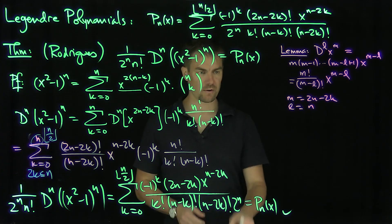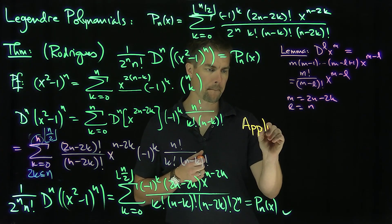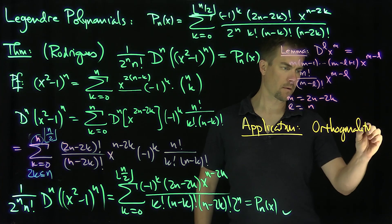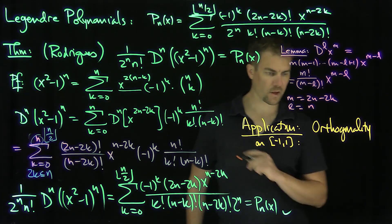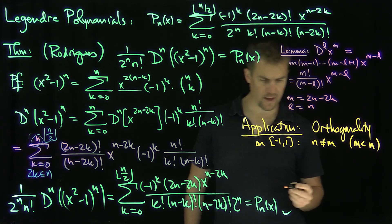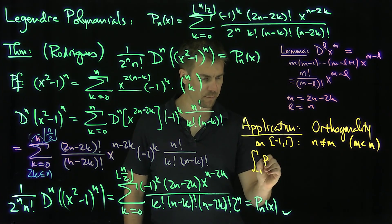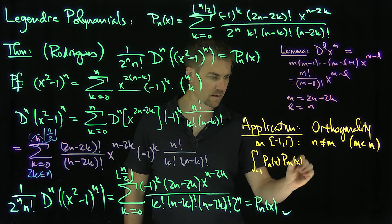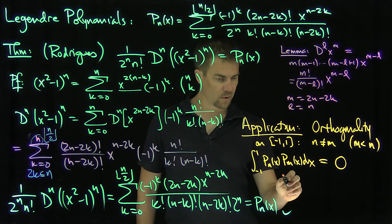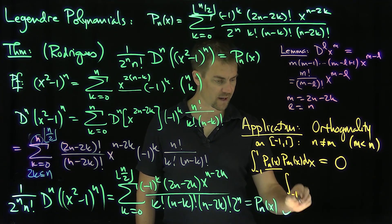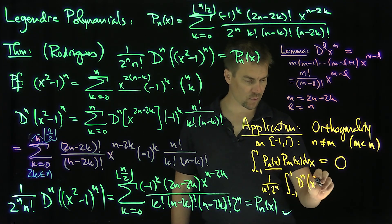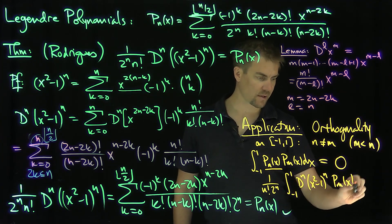This has a very interesting application: orthogonality on the integral from negative 1 to 1. If n is not equal to m — we can assume m is less than n without loss of generality — then the integral from negative 1 to 1 of Pn of x times Pm of x dx equals 0. In other words, Pn and Pm are orthogonal on negative 1 to 1. We can see this by replacing Pn with its Rodriguez formula: the integral from negative 1 to 1 of 1 over n factorial 2 to the power n, times n derivatives of x squared minus 1 to the power n, times Pm of x dx.